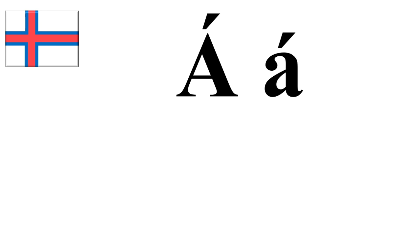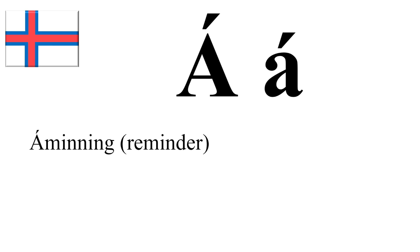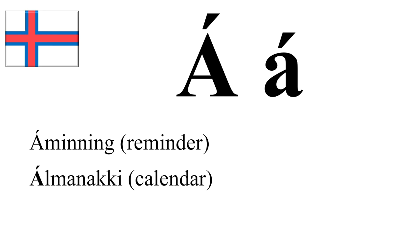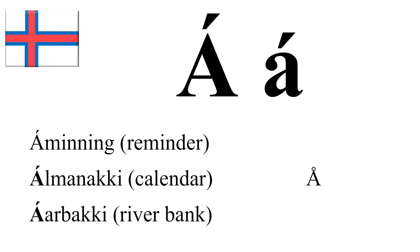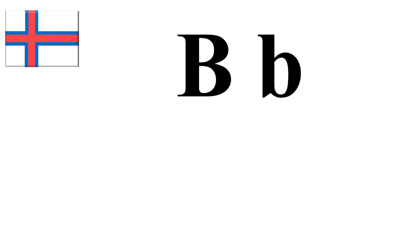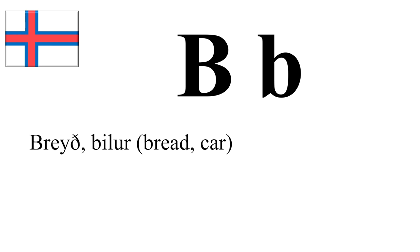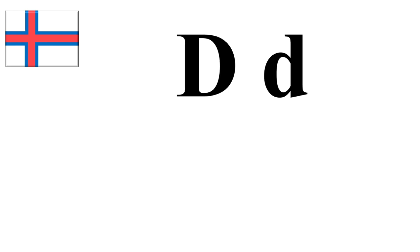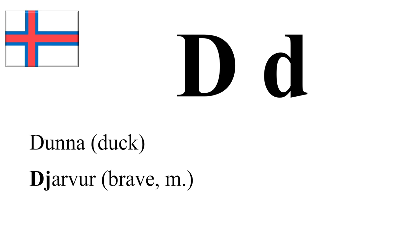Then we have Á. As in Á-menning. But then we also have the sound Almanage — as in the Danish Á. And then there's also Ó-ar-ba-tje, as in Ó. Ó-ar-ba-tje. Jarvur.